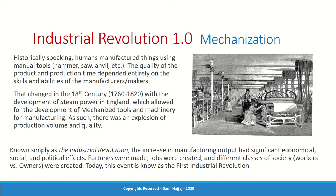With the development of steam power came mechanization — machines that can do the work. Instead of sawing by hand, the machine will do it for you. This industrial revolution was truly a revolution in production output, with significant economic, social, and political impact. It changed fortunes, created millions of jobs, made billionaires, and created new classes of society: workers and the owners, the industrialists.